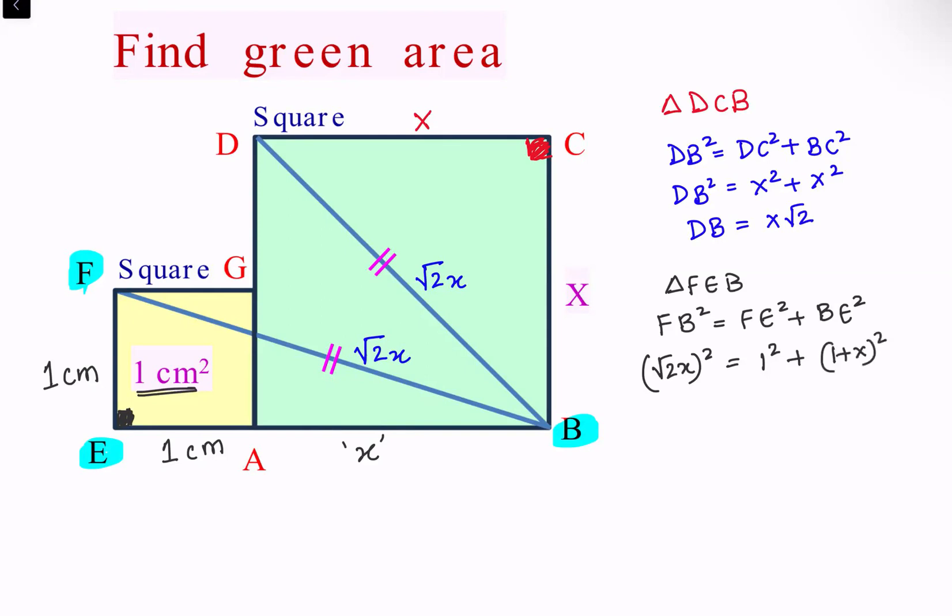Opening up the bracket, you will get 2X square is 1 plus 1 plus X square plus 2X. Taking everything on the left side, we will get X square minus 2X minus 2 equals 0.